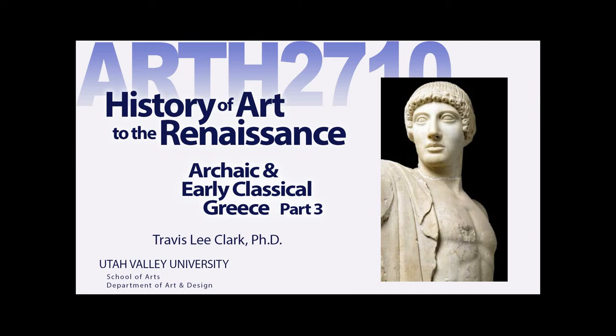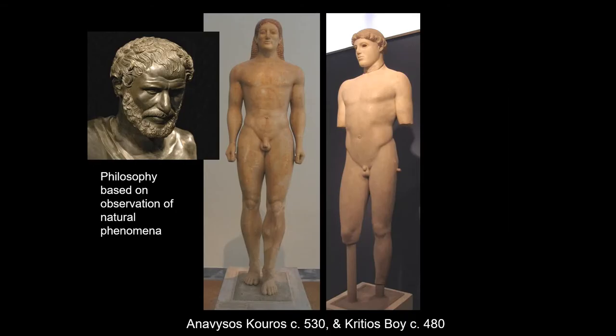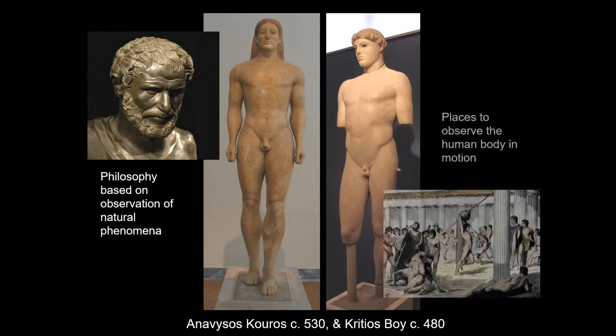Welcome back. Last time we talked about the birth of classicism, this incredible moment in the 5th century that sees the arrival of a truly rational, naturalistic form of art. This new form of art really only could have happened in ancient Greece, which had the combination of rational philosophy emphasizing observation of natural phenomena, a love of sport and exercise, and social institutions that gave people the opportunity to see the body in motion. These two things come together to create the revolution in naturalism we call contrapposto or classicism.